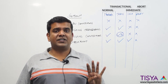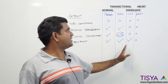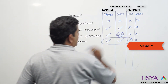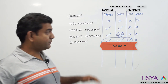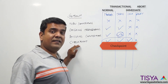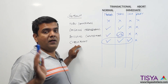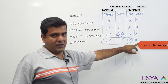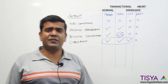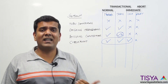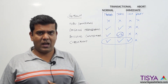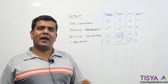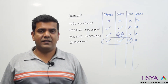There are basically four types of shutdown: normal, transactional, immediate, and abort. Normal, transactional, and immediate all have a checkpoint occurring, which makes them a clean shutdown, meaning the database will start up properly next time without needing instance recovery. Shutdown abort, however, requires instance recovery on the next startup. The previous video covered how to start up a database, and this video discussed what happens during a shutdown.